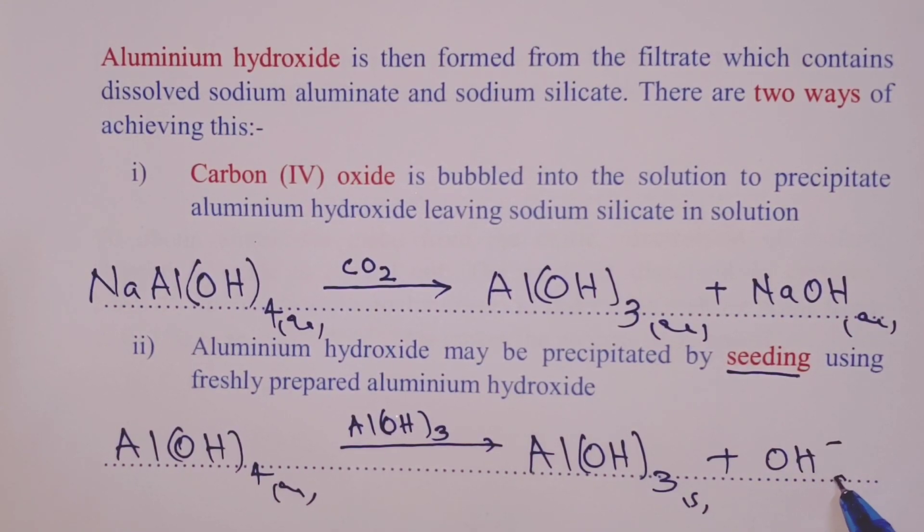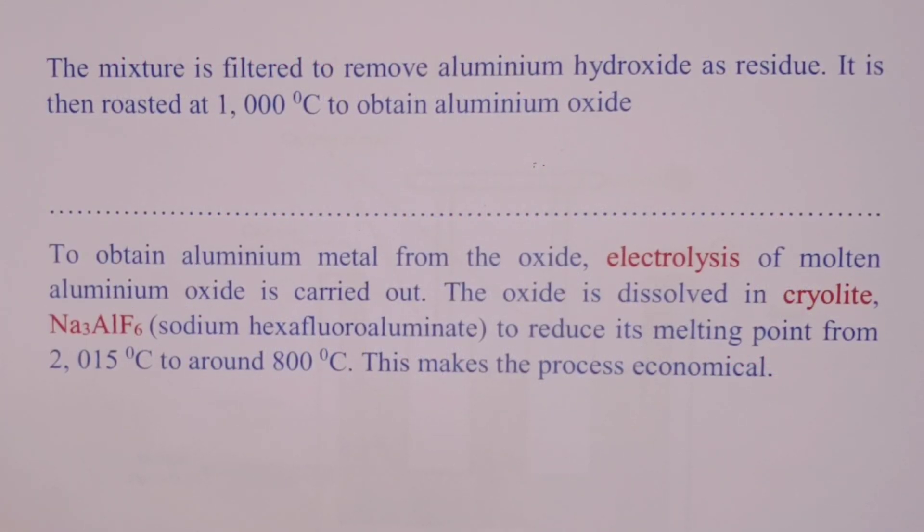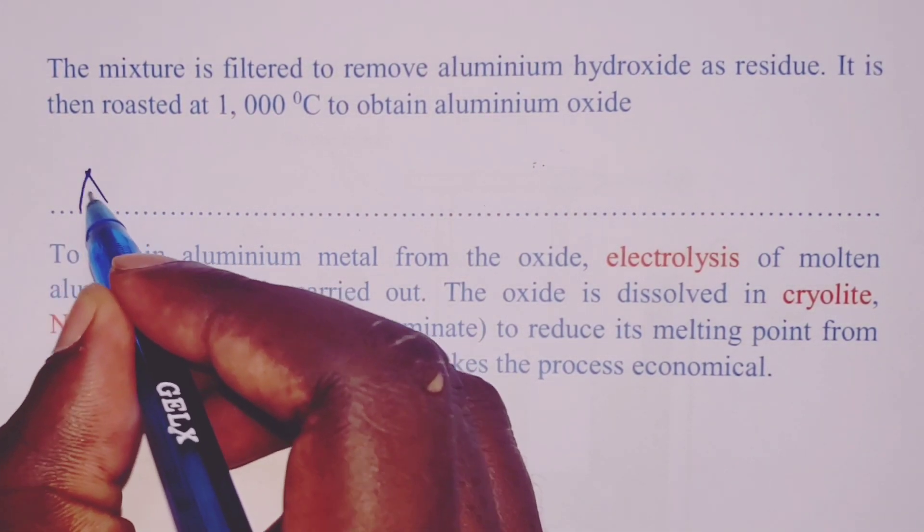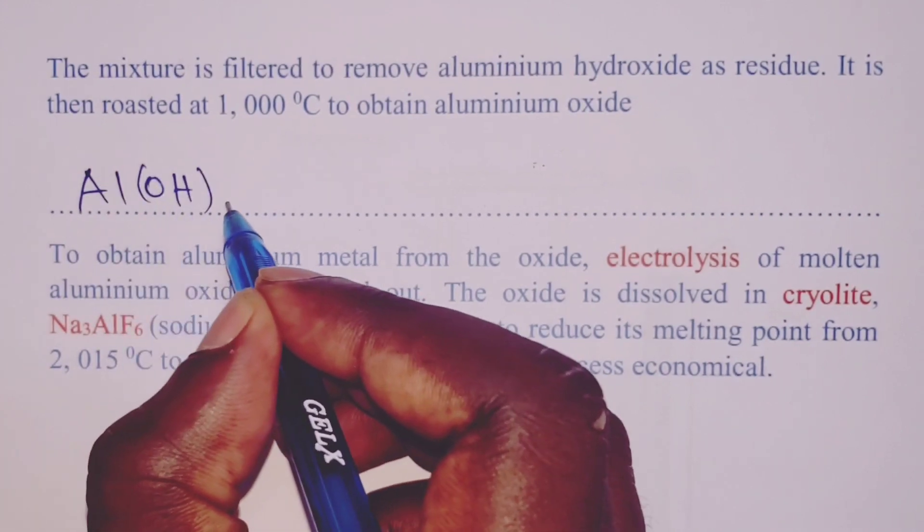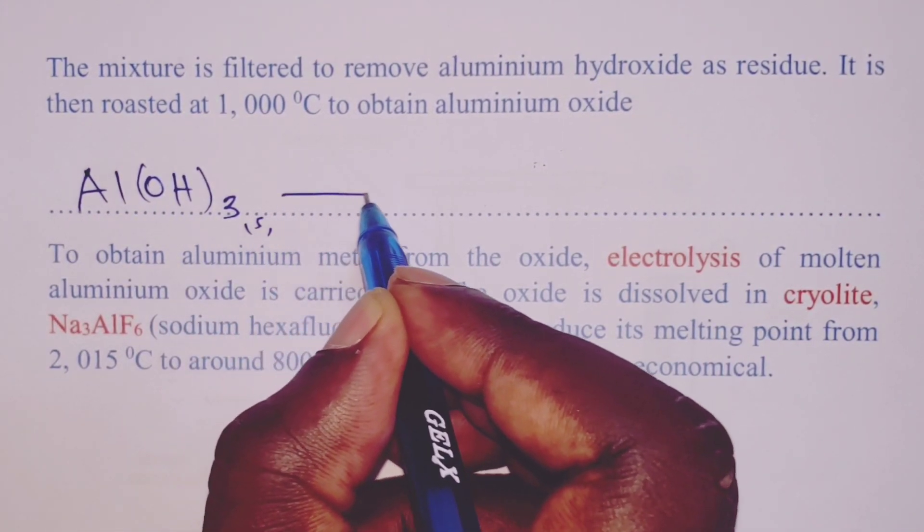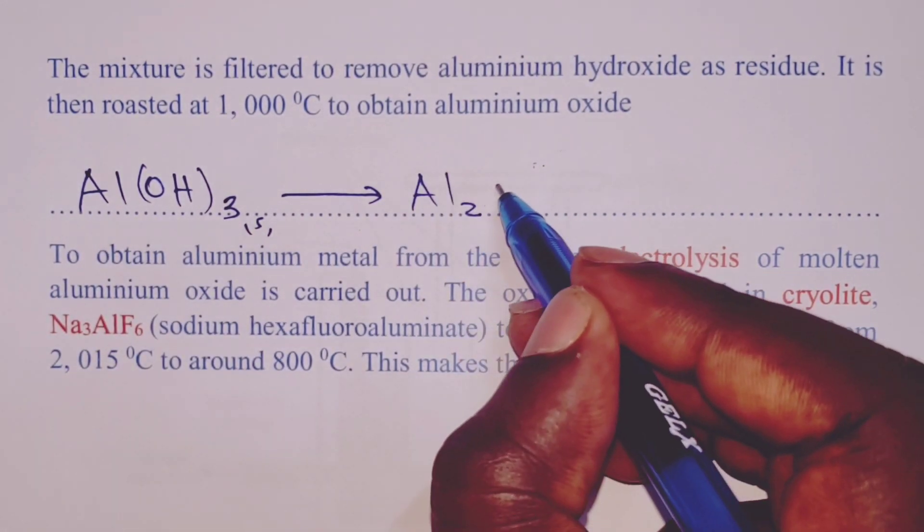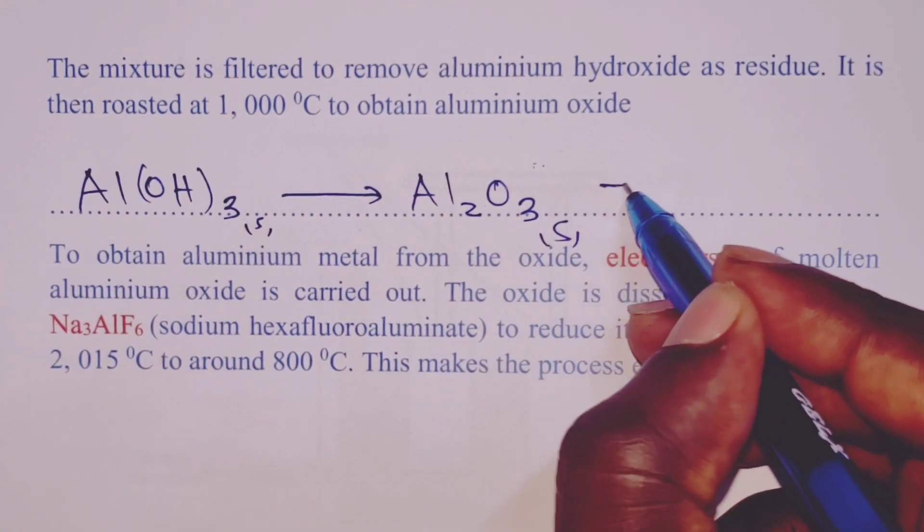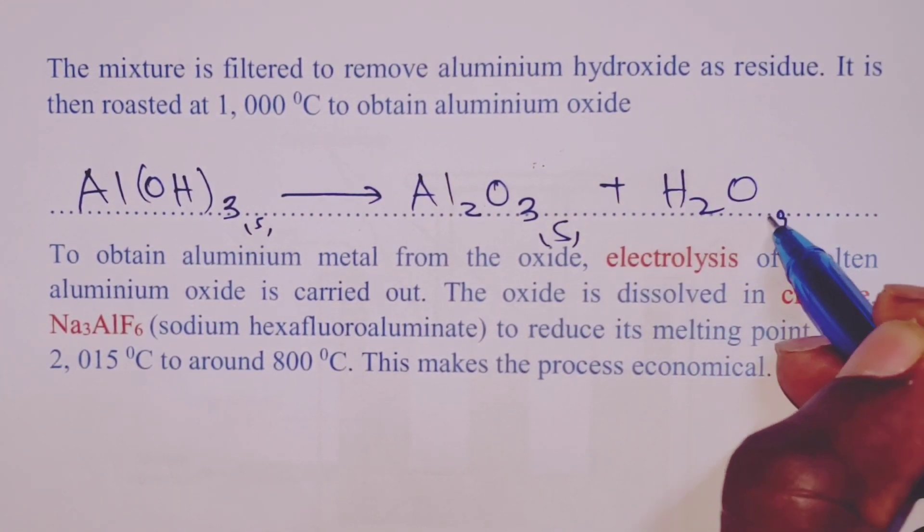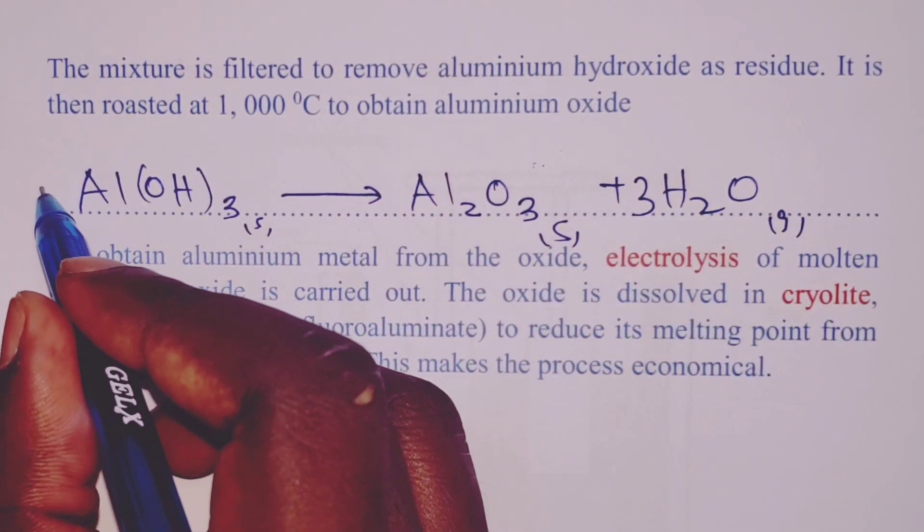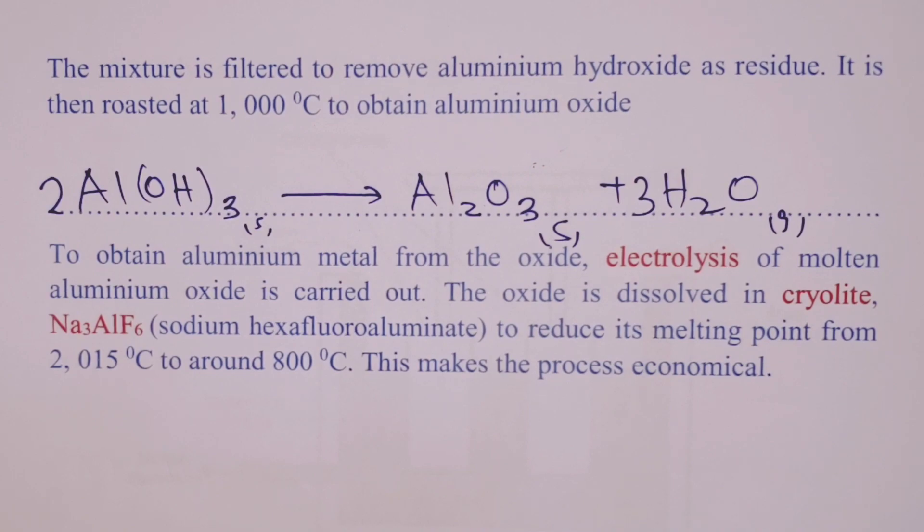Let's now look at how to obtain aluminum oxide from the aluminum hydroxide having been precipitated from sodium aluminate. We roast it to obtain aluminum oxide. The equation for the reaction would be: aluminum hydroxide residue being heated to about 1,000 degrees Celsius will be decomposed to aluminum oxide and water or steam, balancing with a 3 on water and a 2 on aluminum hydroxide.